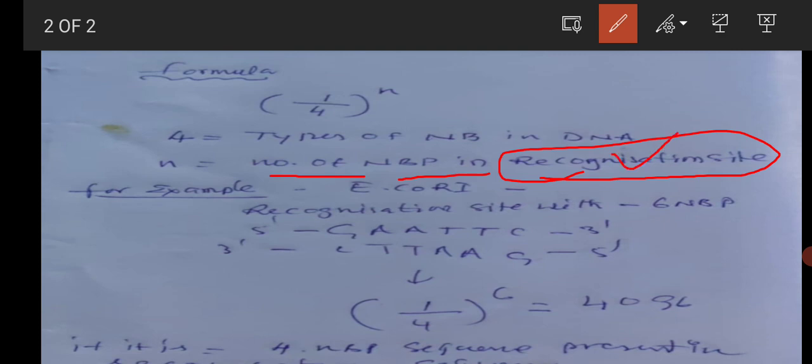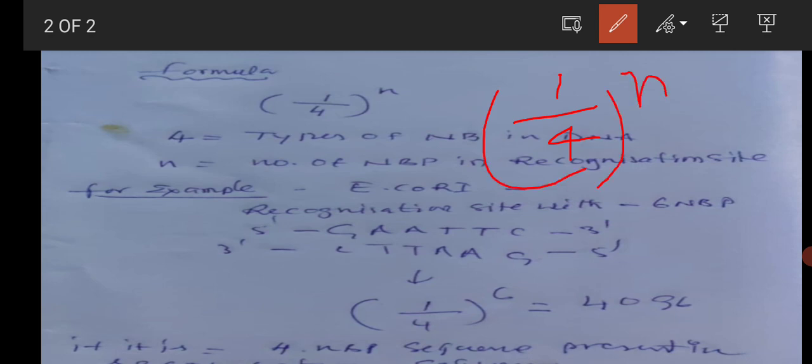So this is a very simple formula. If you will apply it, they have given 1/4^n. One upon four to the power n, where four is already given and we have to find the value of n.